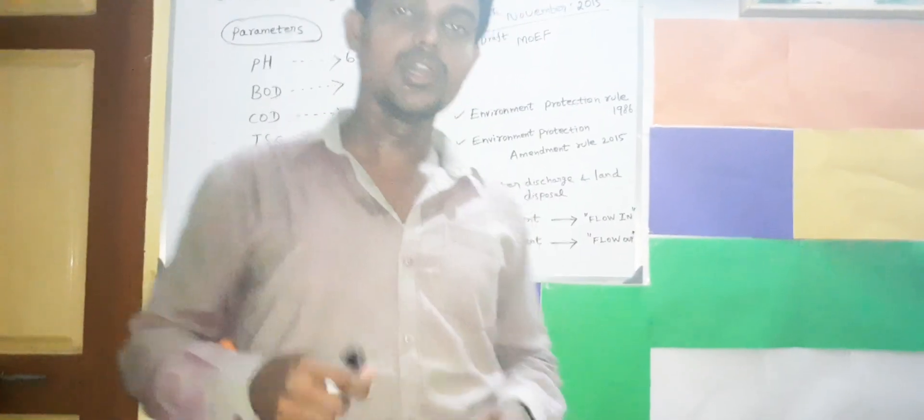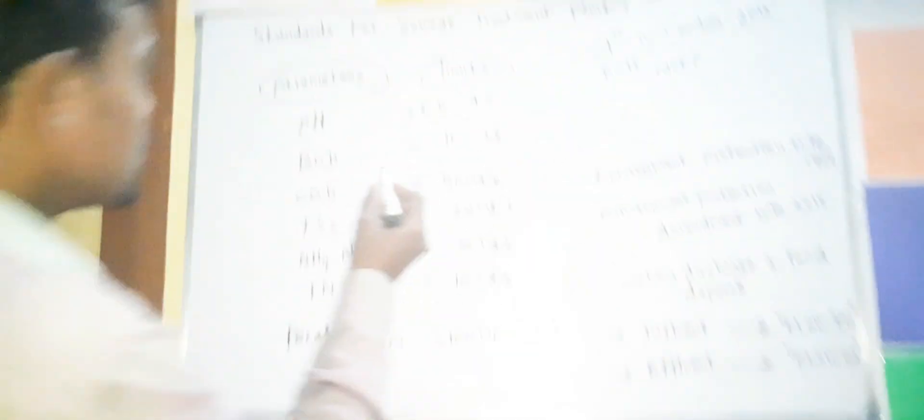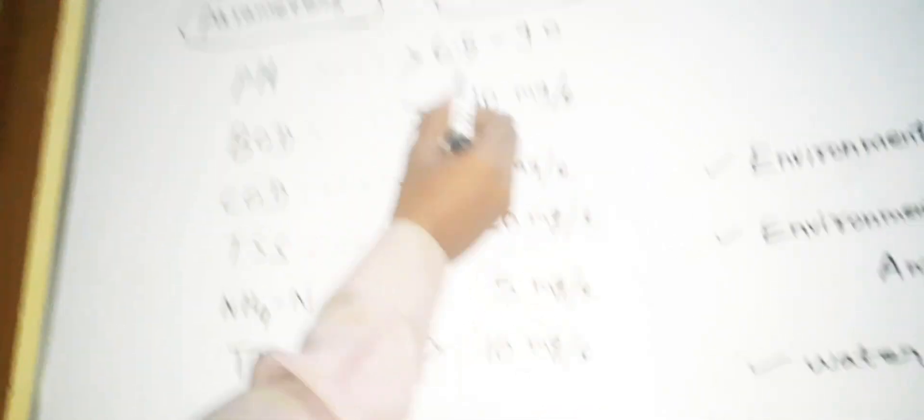So the parameters: Inflow and Outflow. pH range is 6.5 to 9.